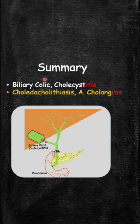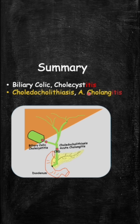As a quick recap: biliary colic and cholecystitis are not yellow — they don't cause jaundice, because the stone is obstructing higher up and the common bile duct is still open, so the liver can still drain. On the other hand, choledocholithiasis and ascending cholangitis have the stone obstructing the common bile duct, so the liver can't drain bile — therefore, they're both yellow and can both cause jaundice.